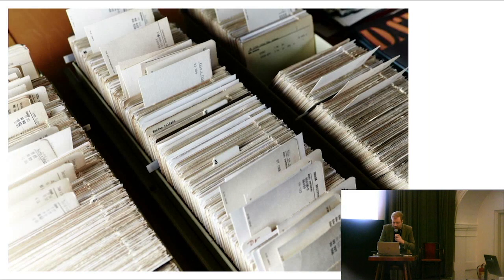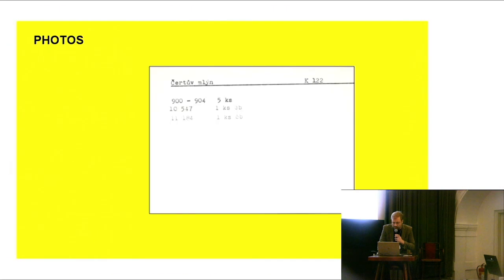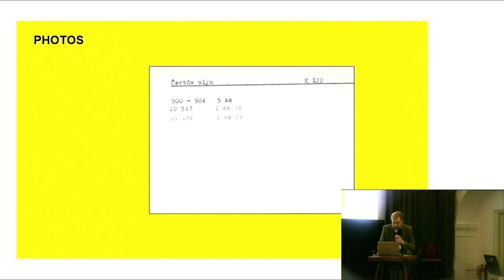This is an example of our paper card catalog of photographs. This card shows the most basic description including the name of the film the photograph is related to, accession numbers, and the number of items of the same content.